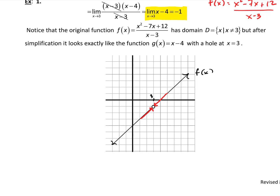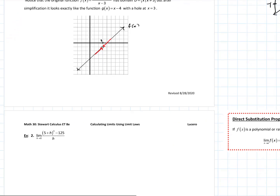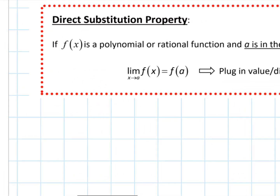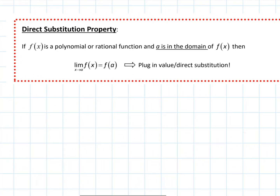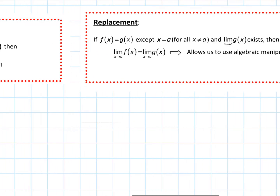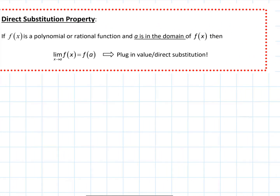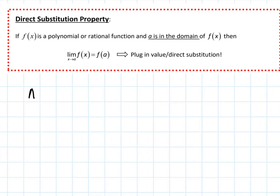So that's a brief overview coming into this video. We're going to utilize two properties: the direct substitution property, which lets us directly substitute in if a is in the domain, and the replacement property, which allows us to use algebraic simplification to replace the function and calculate limits using replacement functions.